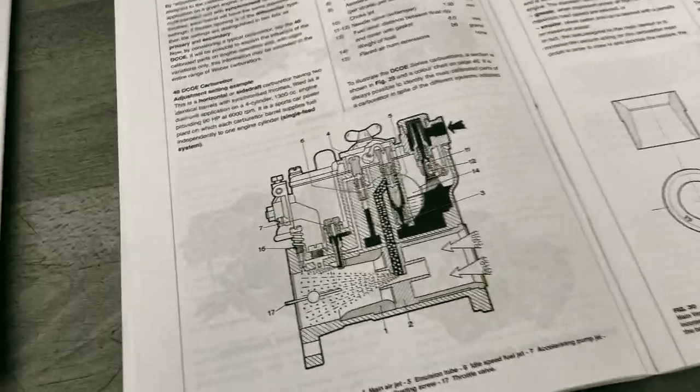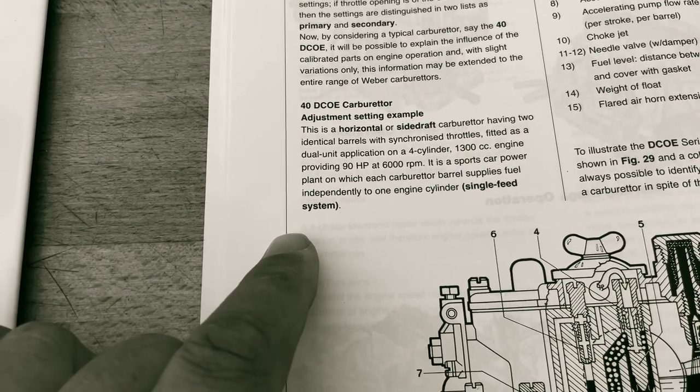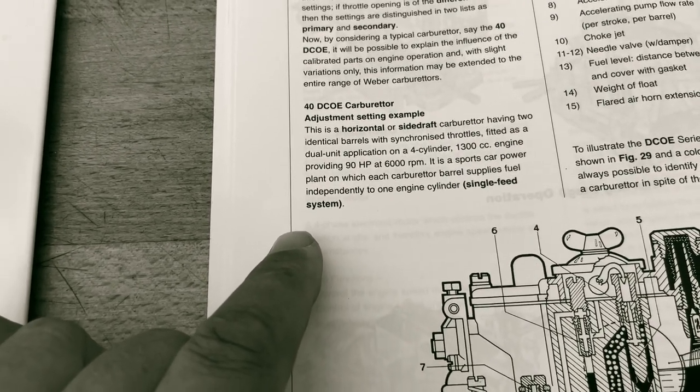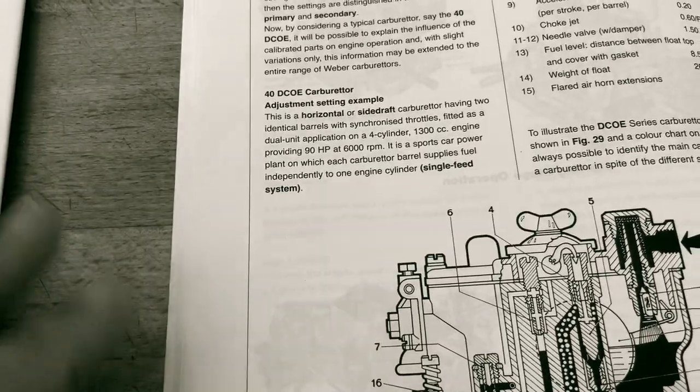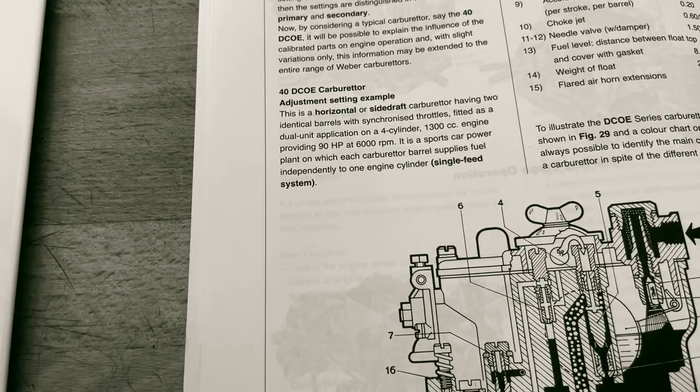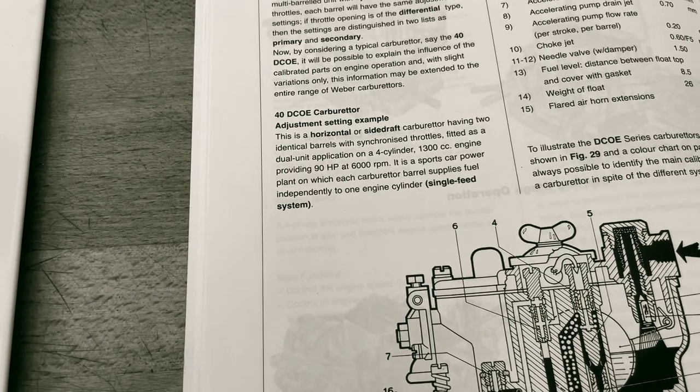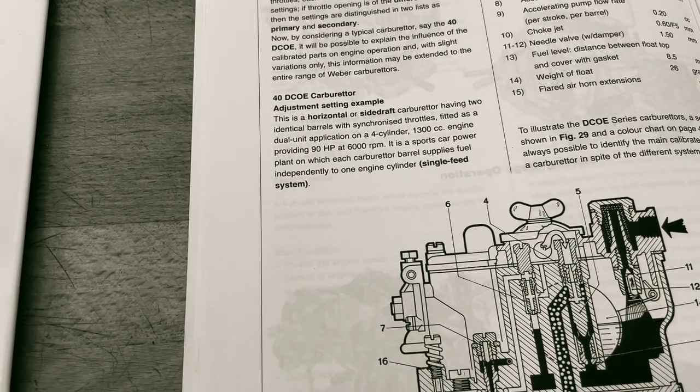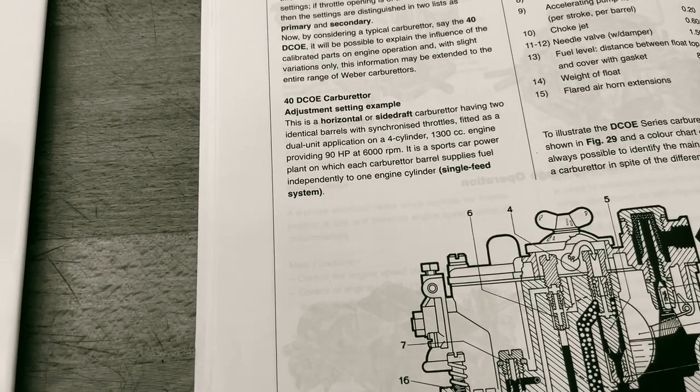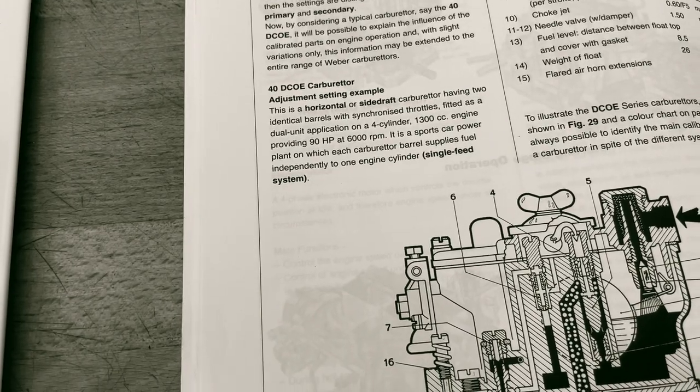Okay, let's look into our case. First page about the DCOE - it says in the book: 40 DCOE carburetor adjusting settings example. This is a horizontal or side draft carburetor having two identical barrels with synchronized throttles, fitted as a dual unit application on a four-cylinder engine - two carburetors, 1300cc engine providing 90 horsepower at 6000 RPM. Sounds familiar. It is a sports car power plant on which each carburetor barrel supplies fuel independently to one cylinder.